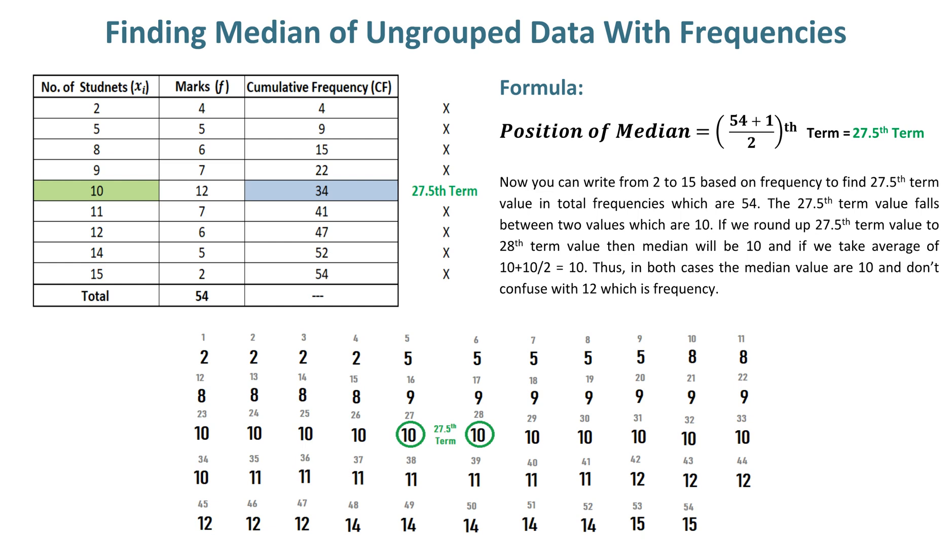The 27.5th term value falls between two values which are 10. If we round up the 27.5th term to the 28th term, then median will be 10.